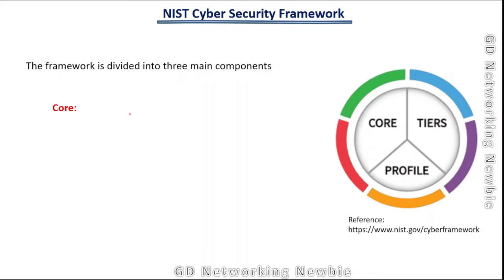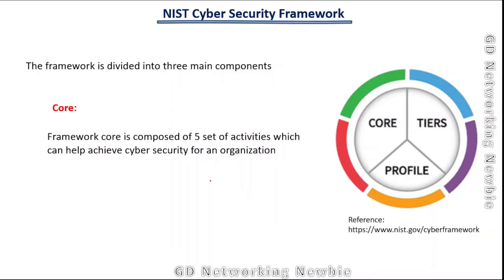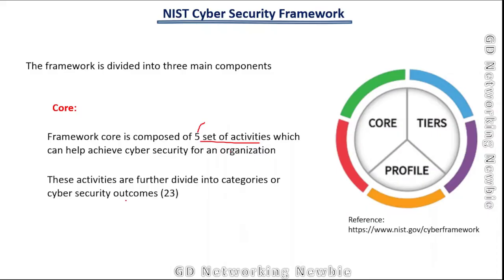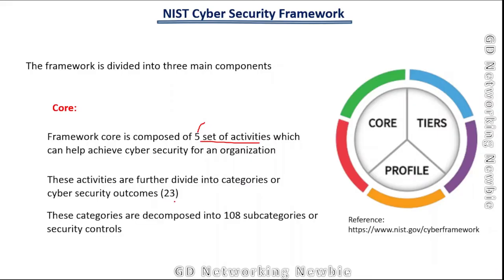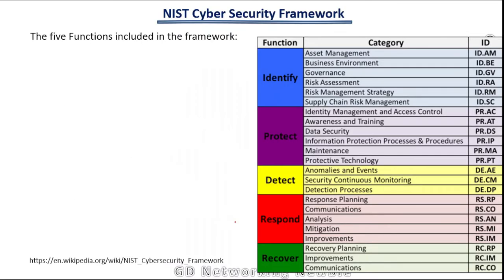The first component is the core, which is composed of five functions or set of activities. These five functions help organizations achieve their cyber security goals. Those functions are further divided into 23 categories, also known as Cyber Security Outcomes, and those categories are further decomposed into 108 subcategories, also known as security controls. The five functions are: Identify, Protect, Detect, Respond, and Recover.